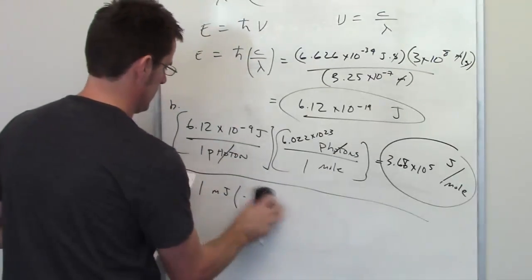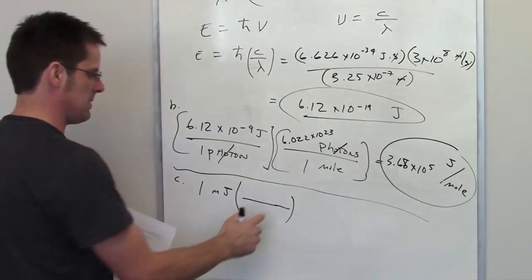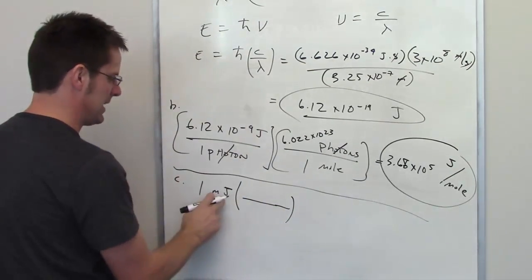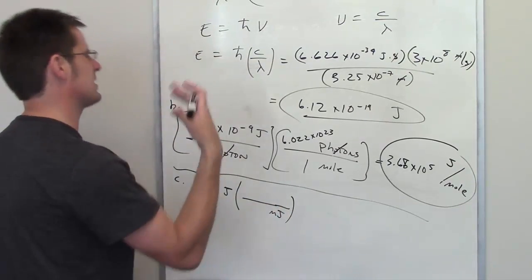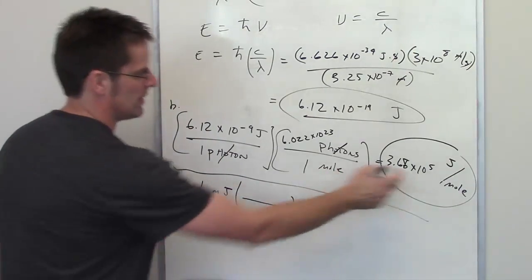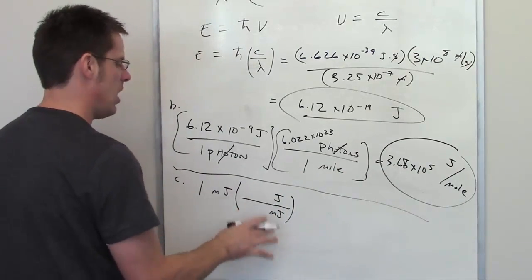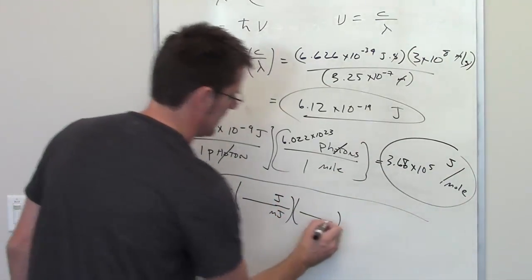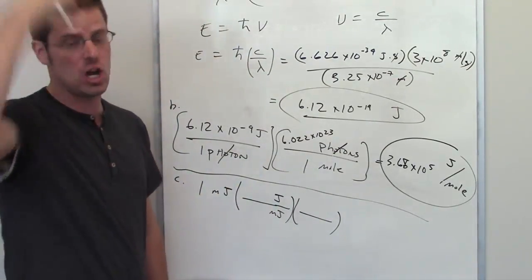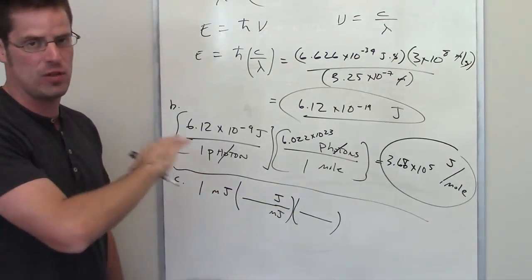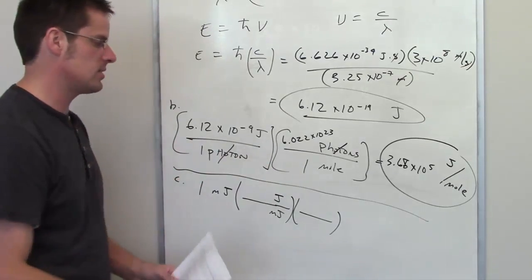I'm going to do some unit analysis. I've got one millijoule up top. I want to cancel out millijoules, so I'll put millijoules in the denominator. I can relate millijoules to joules, so I put joules in the numerator. Then I'll put joules in the denominator of the next conversion, and use the joules-per-mole value from Part B to put moles in the numerator. As long as we cancel out units in the proper locations, we'll always be right.